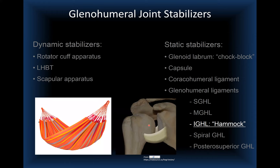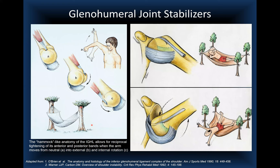The most important of the glenohumeral ligaments is the inferior glenohumeral ligament, particularly its anterior band. The best analogy is a hammock attached to the glenoid side and the humeral side. It has an anterior band, a posterior band, and the axillary recess between the two bands.